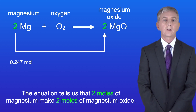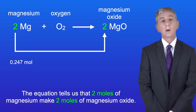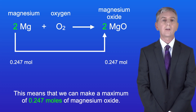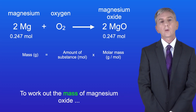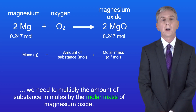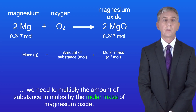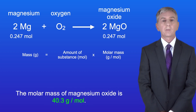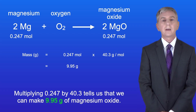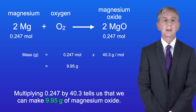The equation tells us that 2 moles of magnesium make 2 moles of magnesium oxide. This means that we can make a maximum of 0.247 moles of magnesium oxide. To work out the mass of magnesium oxide we need to multiply the amount of substance in moles by the molar mass of magnesium oxide. The molar mass of magnesium oxide is 40.3 grams per mole. Multiplying 0.247 by 40.3 tells us that we can make 9.95 grams of magnesium oxide.